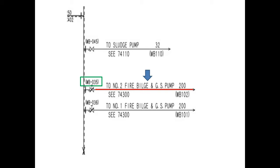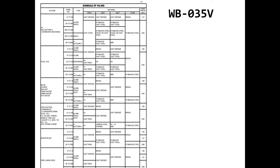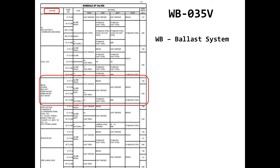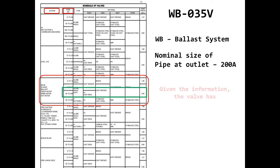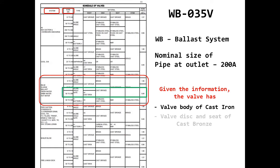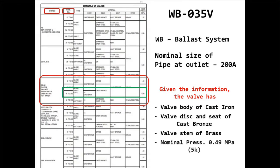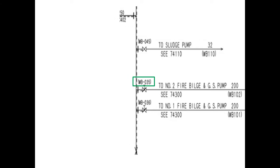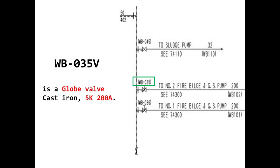Looking at the size of the pipe connected on its outlet, it has a nominal size of 200 or 200A. Referring to the table of valves, we can see that it is a globe valve with a body of cast iron, a valve disc and seat of cast bronze, and a valve stem of brass, with a nominal pressure of 0.49 MPa or approximately 5 kilograms per square centimeter, denoted by the nominal pressure symbol 5K. To summarize, the WV 035 valve is a globe valve, cast iron, 5K, 200A.